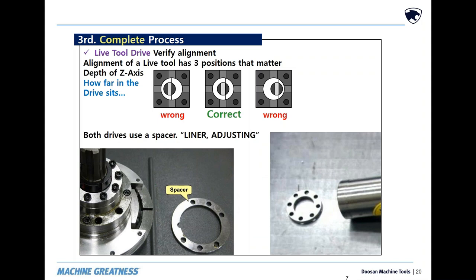The adjusting liner or spacer set the depth that the drive sits into the turret. If the drive was originally in the correct position and was just removed, when putting it back in, this depth will remain correct.